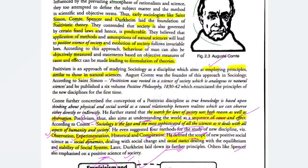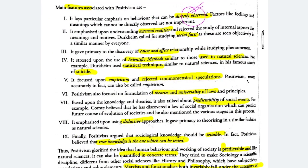If you don't remember all these things, don't get confused. If you are studying sociology for the first time, repeat the lecture until you understand. The main features associated with positivism are that it lays particular emphasis on behavior that can be directly observed, because you experiment on those things. Things that are not directly observable — feelings, meaning — you cannot directly observe in your research and are therefore not important. Second, positivism emphasizes external realities and rejects the study of internal aspects like meanings and motives.